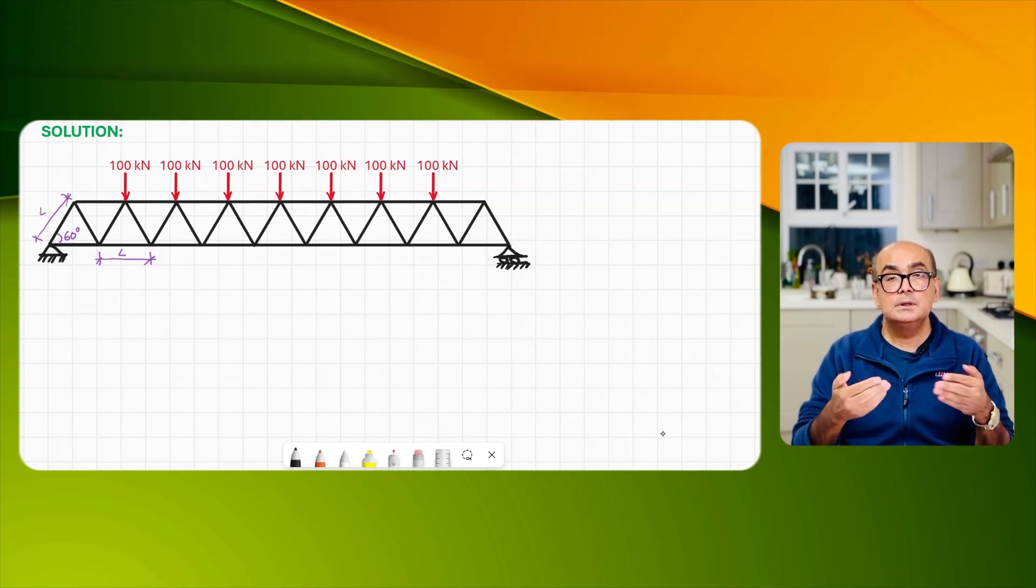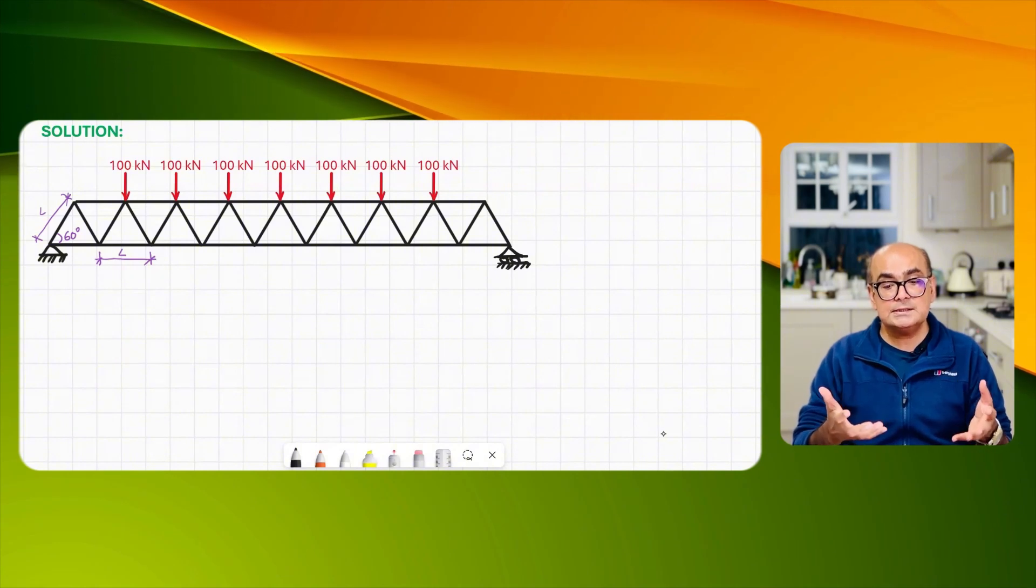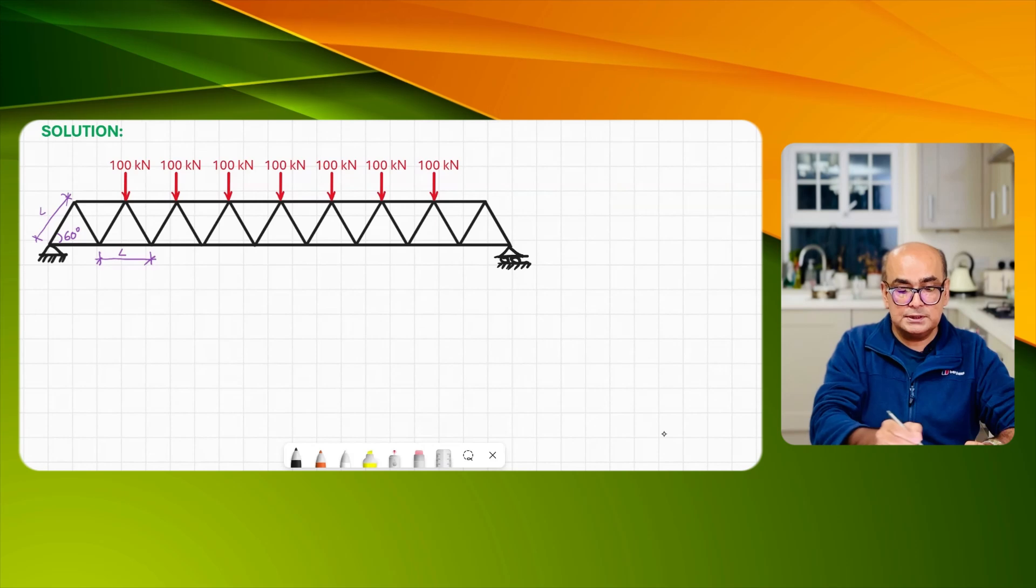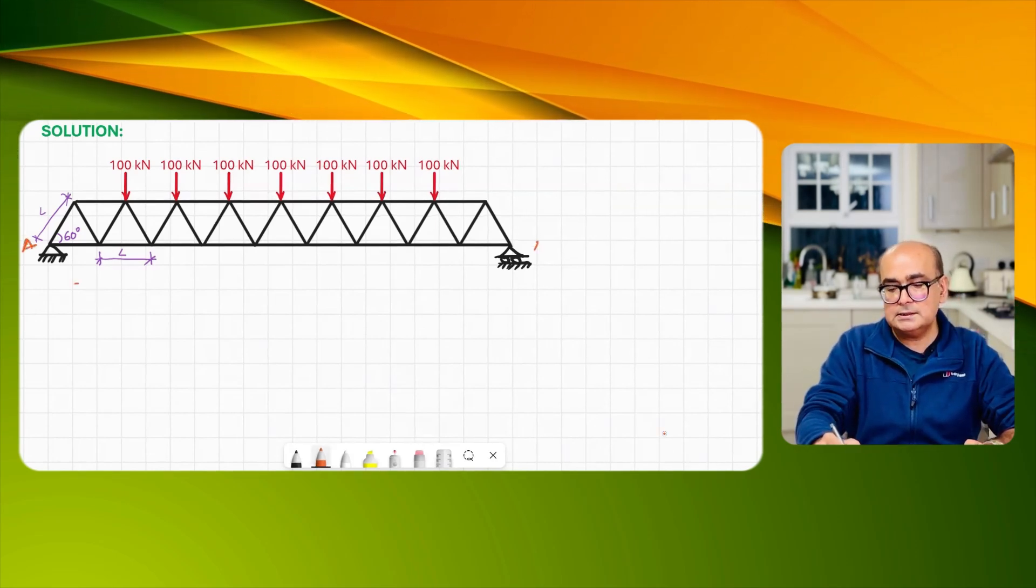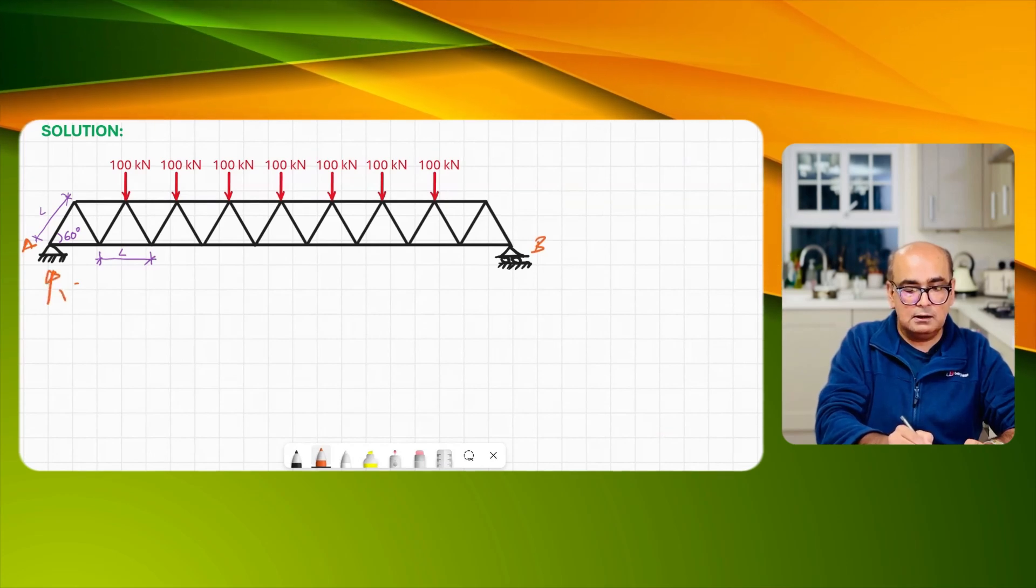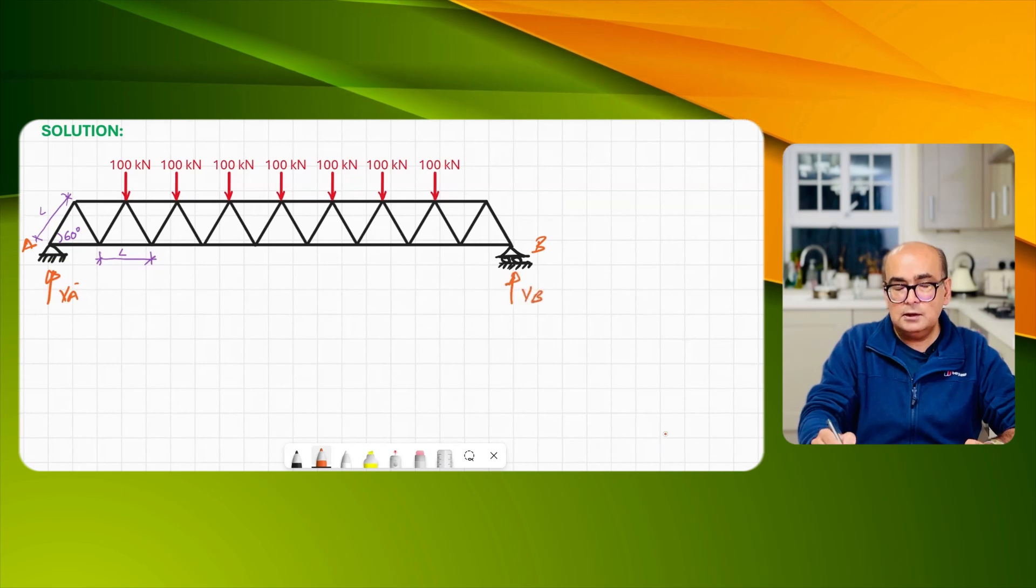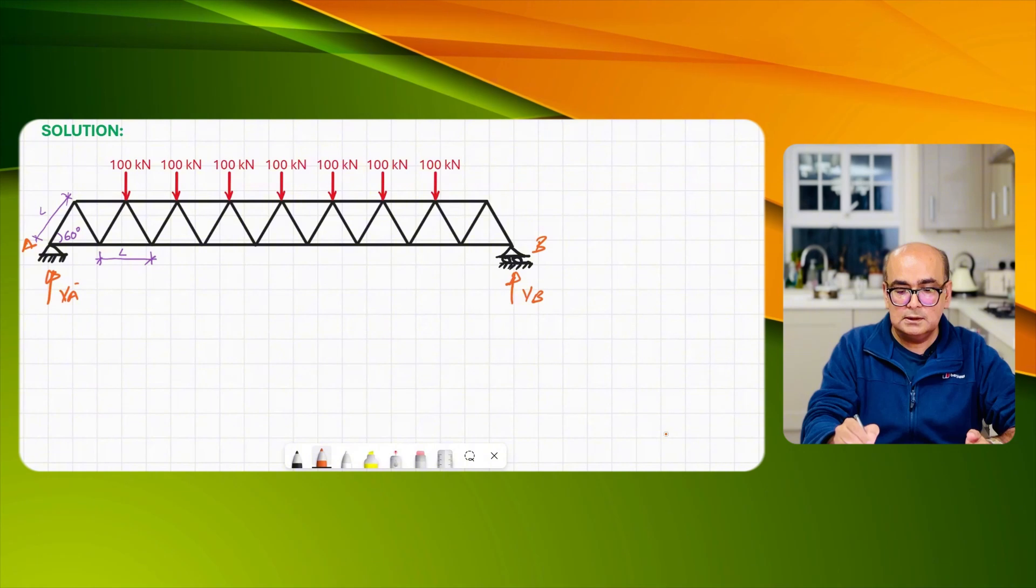These are equilibrium equations to find out reactions. Here we just have straight away seven points where load is applied. I call the left side as A and right side as B and the reactions are VA and VB.